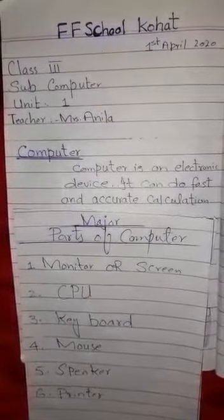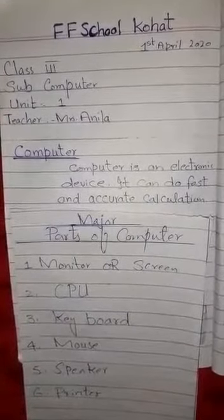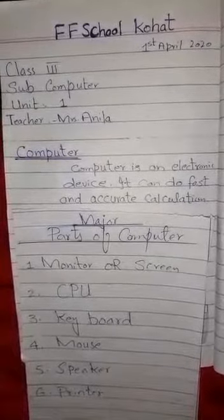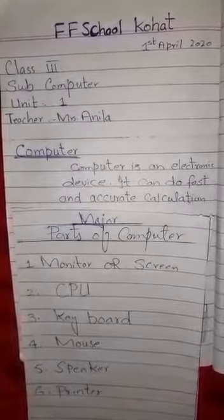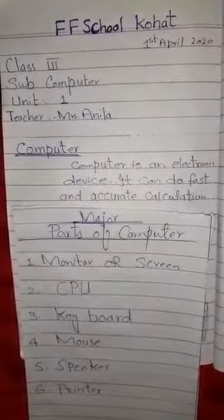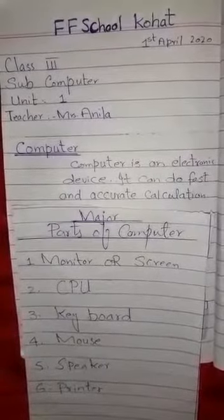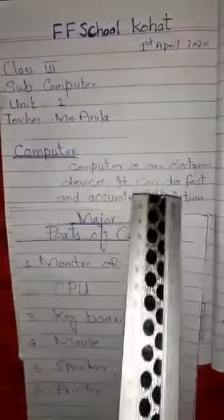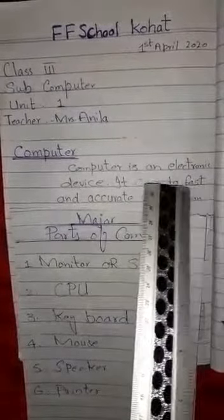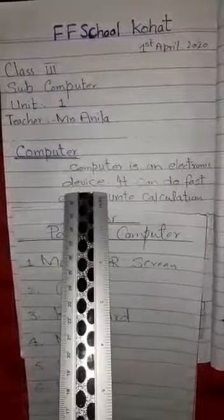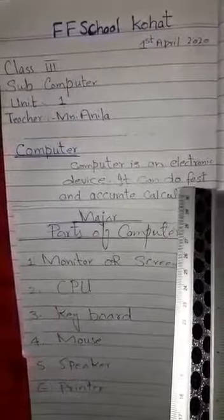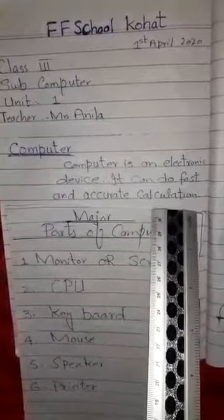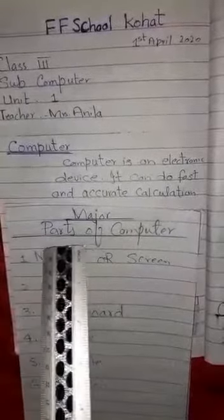The term computer is derived from the Latin word 'computare', which means to count, to sum up, to think together, to calculate, or a programmable machine. So a computer is an electronic device that can do fast and accurate calculations.